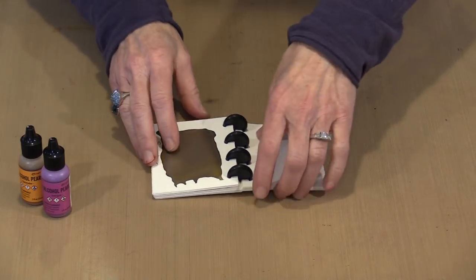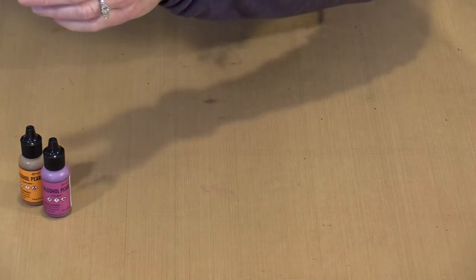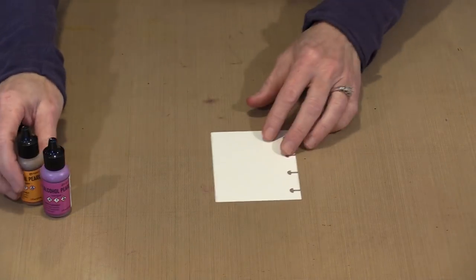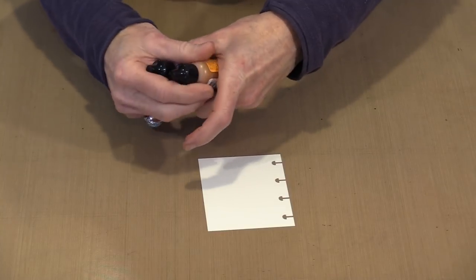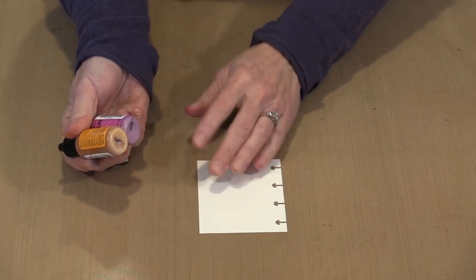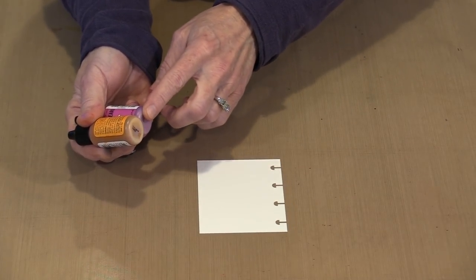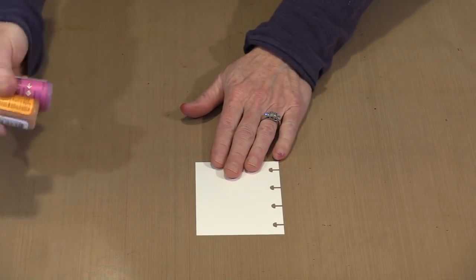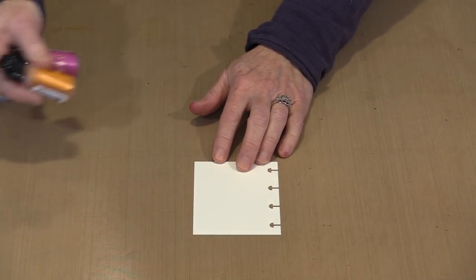So when you work with these the first thing that you're going to notice is that there are mixing balls. These have only been sitting a couple of minutes but you can see the pearl pigment has begun to accumulate in the bottom. So you want to give them a shake and let that mixing ball do its job.